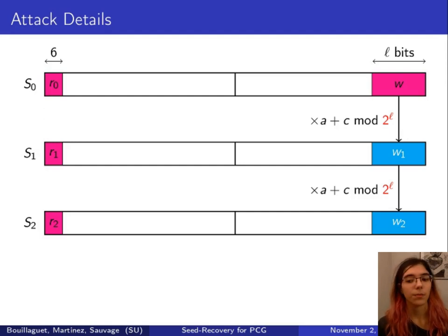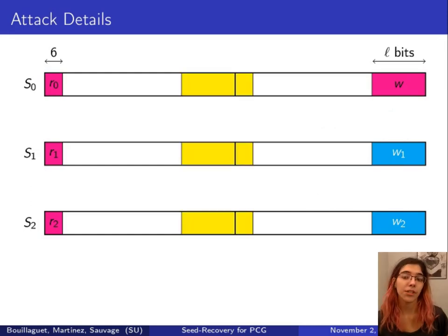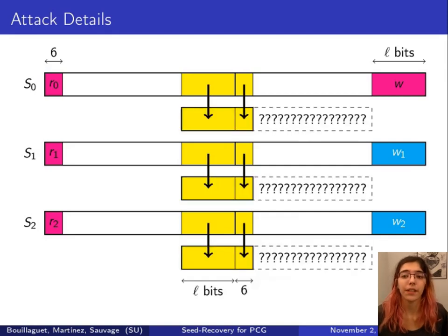We will also guess the six most significant bits of each state, because this will allow us to undo all the rotations, and will give us access to the XOR of the two halves of each state. With this information, we get the yellow part by XORing the known bits with the output.